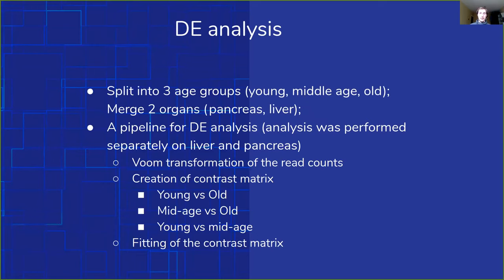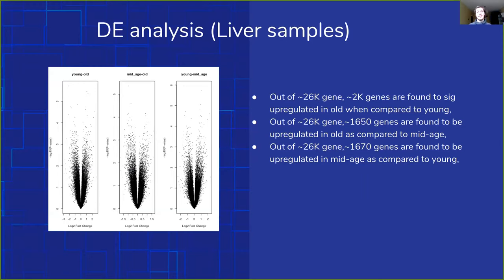We split our data into three groups based on age and did this separately on liver and pancreas samples. From here we got the insight that liver was probably a better one to focus on, so we decided to focus on the liver samples. Of course there was creation of contrast matrices and fitting them, but those insights were not so useful. From the analysis of other samples we found upregulated genes, which proved to be pretty useful since with such a small dataset the curse of dimensionality is a real problem, so finding upregulated genes allowed us to get a smaller feature set to use for machine learning.